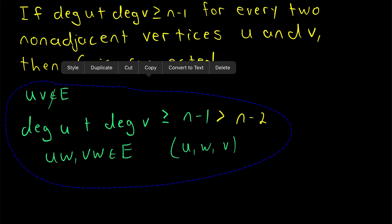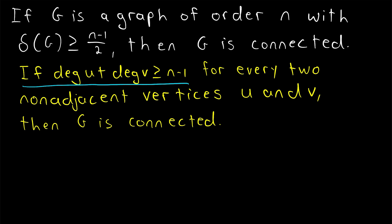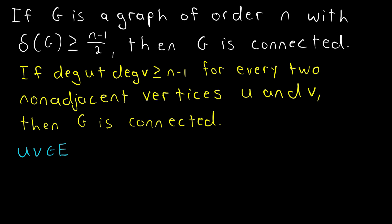Now we can use this result to easily prove the first theorem. We'll assume our graph satisfies the hypothesis that it has n vertices and minimum degree greater than or equal to n minus 1 over 2, and show that it must also satisfy the degree sum condition for non-adjacent vertices, so the graph must be connected. If two vertices u and v are adjacent, then of course there is a path connecting u to v, so all that remains is to show that non-adjacent vertices are connected.